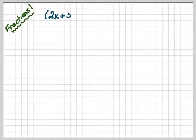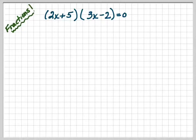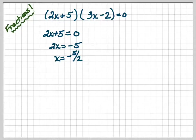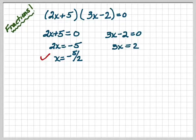Now we're going to deal with fractions. What if we have 2x plus 5 times 3x minus 2 equals 0? You do the same thing as always: 2x plus 5 equals 0, subtract 5, giving 2x equals negative 5, then divide by 2, so x equals negative 5 over 2. The next factor: 3x minus 2 equals 0, add 2 to get 3x equals 2, divide by 3, so x equals 2 thirds.